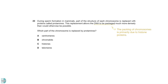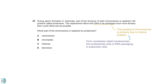The packing of chromosomes is primarily due to histone proteins. These proteins form complexes called nucleosomes, which are fundamental units of DNA packaging in eukaryotic cells. Protamines replace histones, altering the packing of DNA.